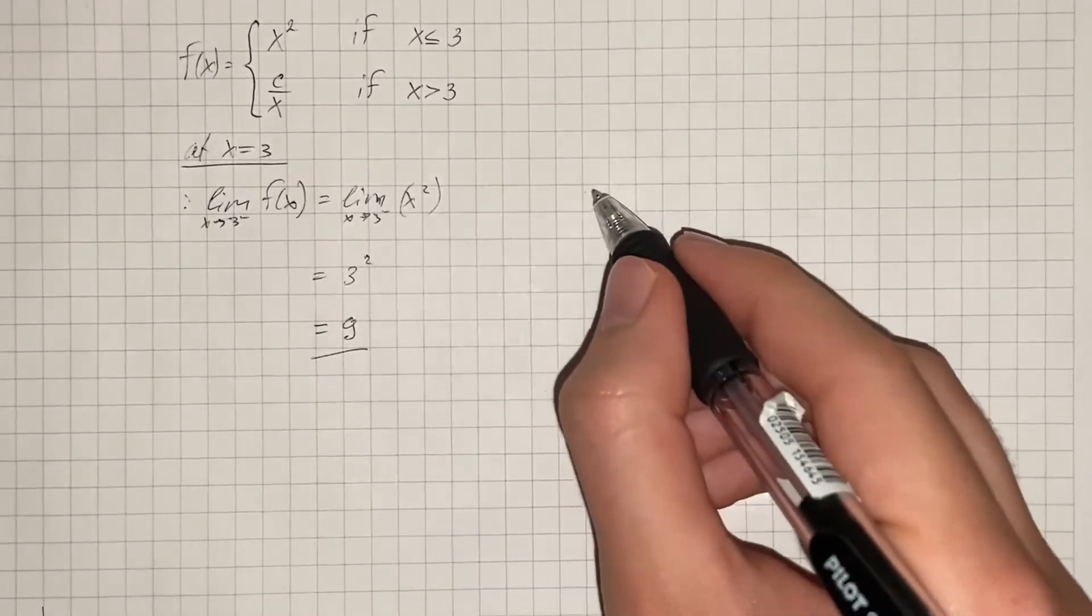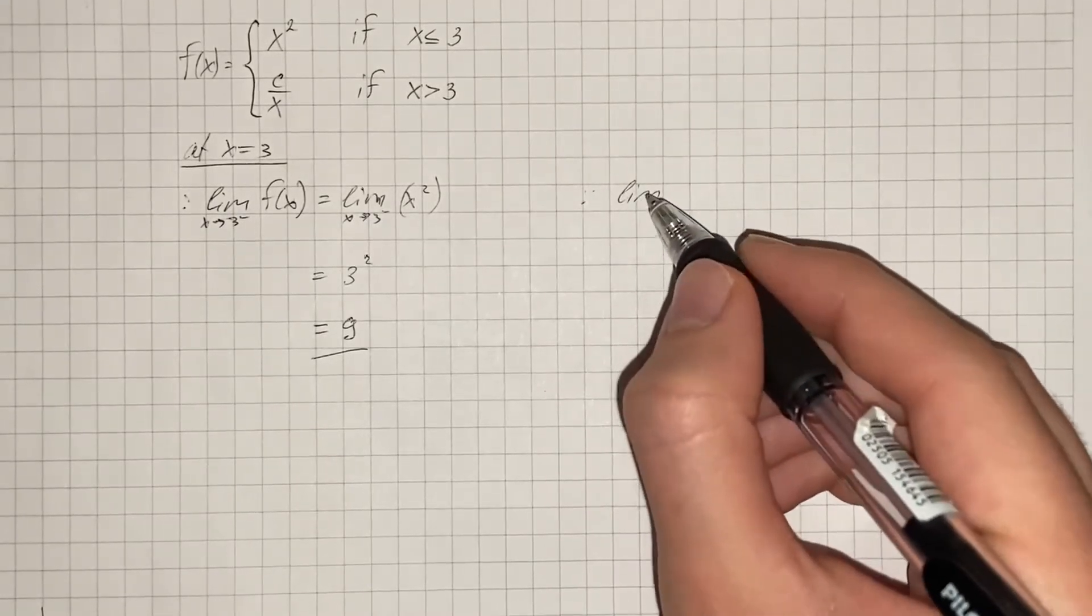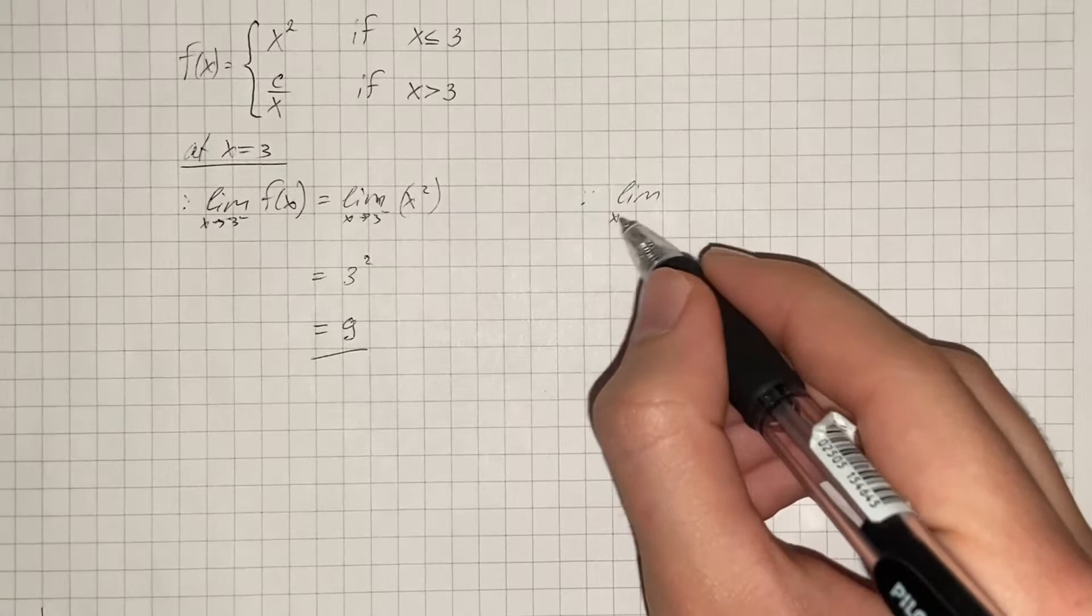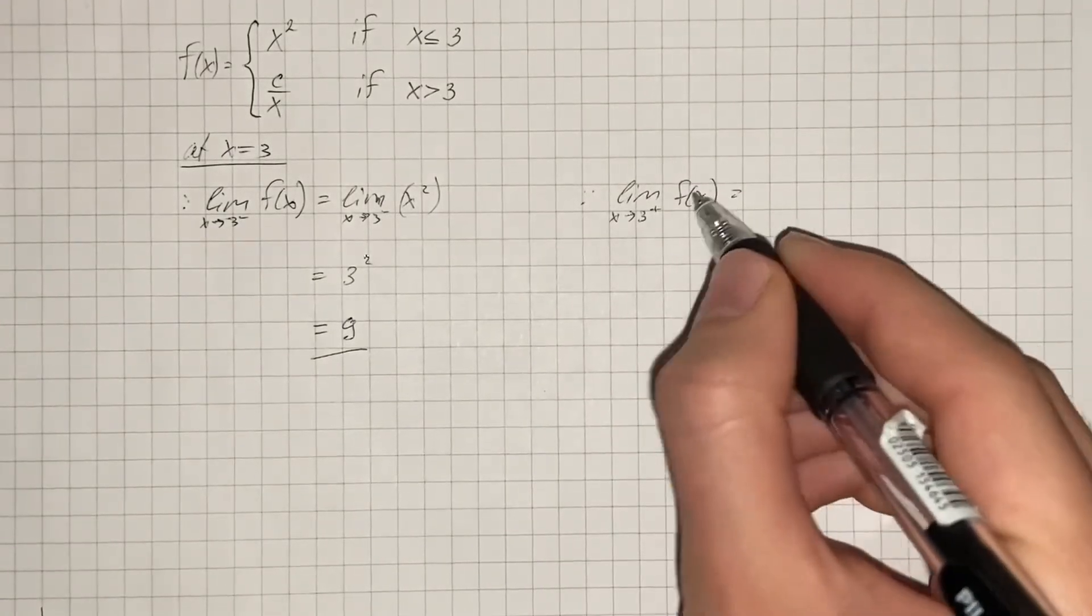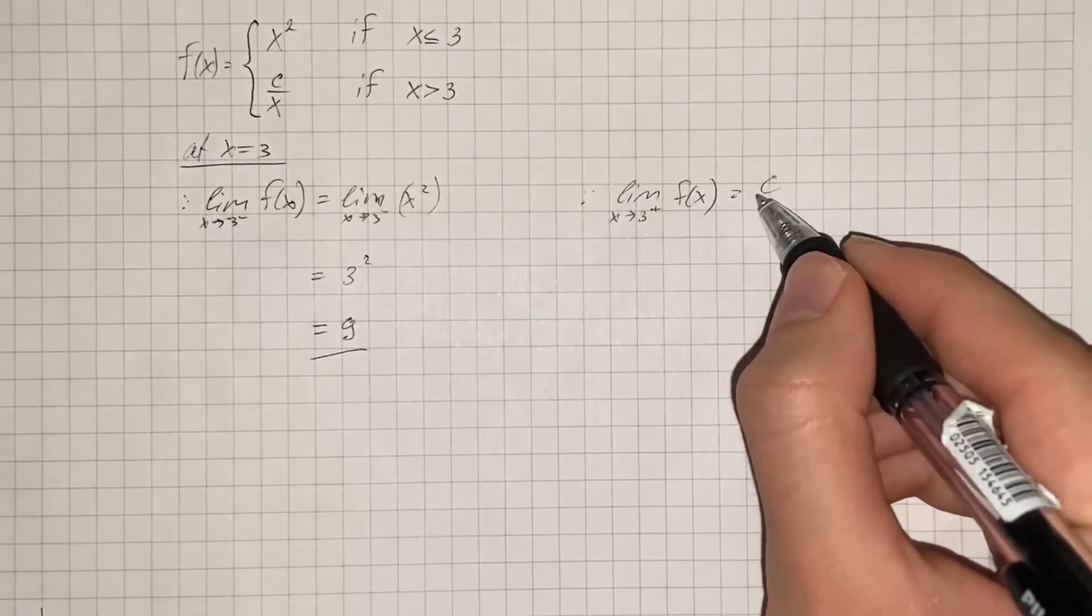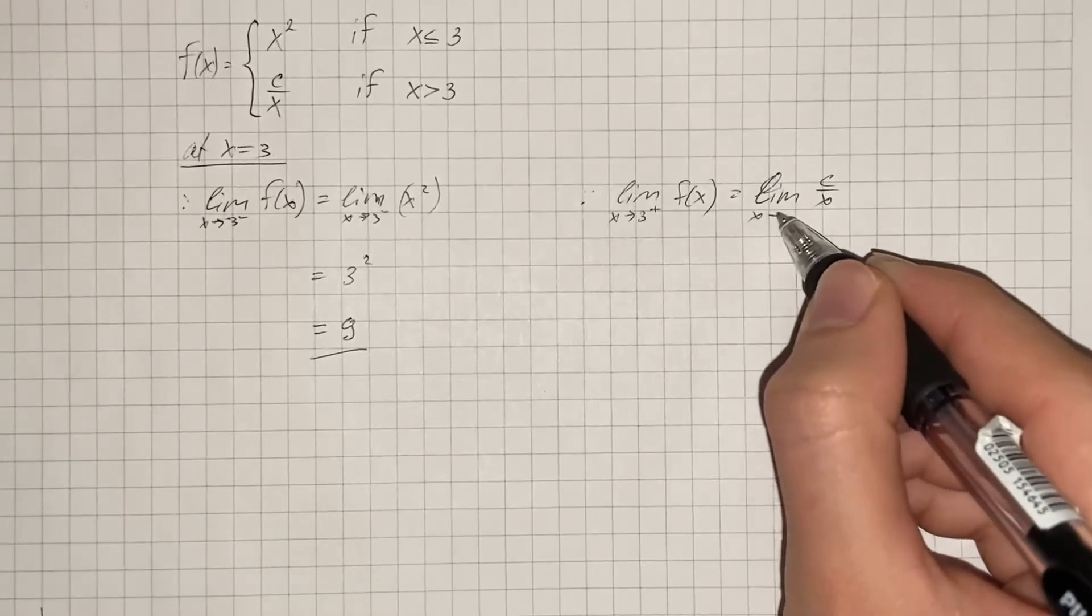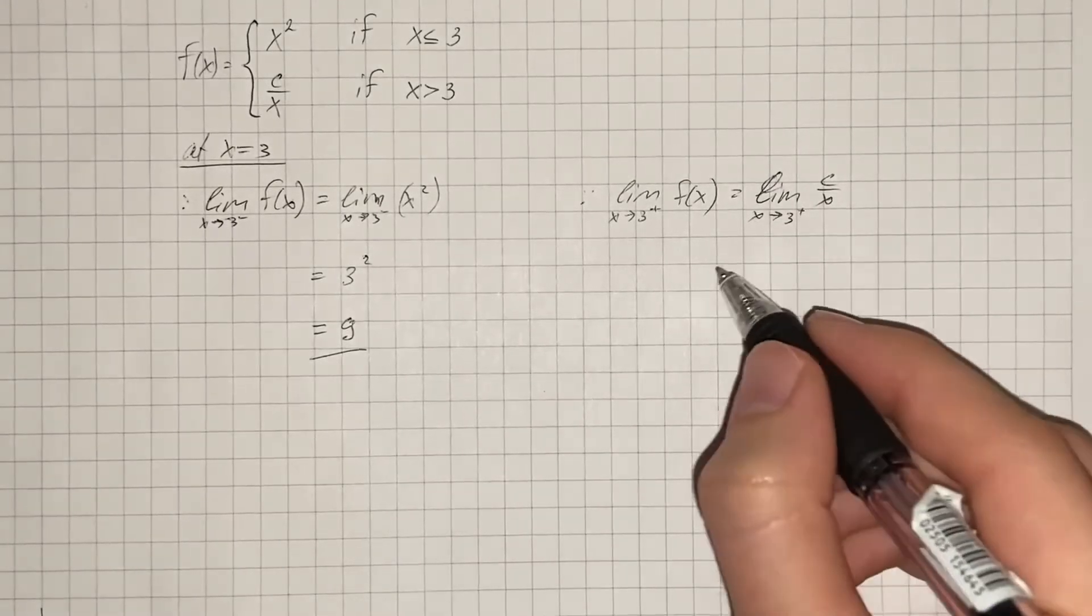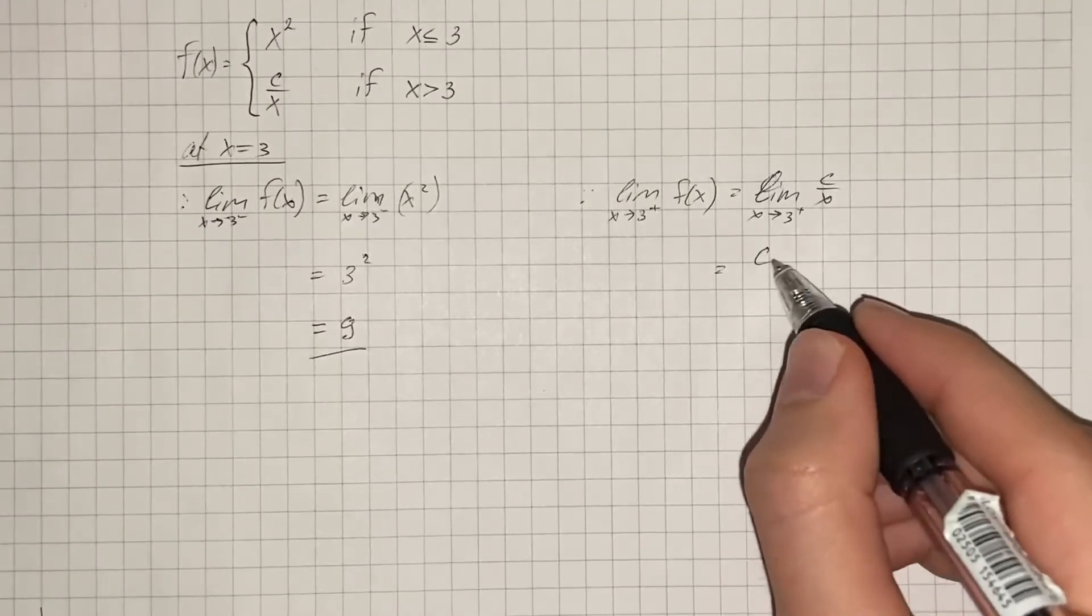And now we're also going to find the right hand limit at x equals 3. So that's limit as x approaches 3 from the right side of f(x), and f(x) equals cx when x is greater than 3. So we substitute x with 3 and we get 3c.